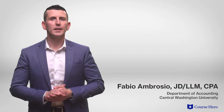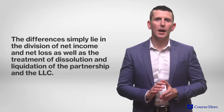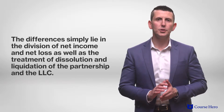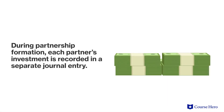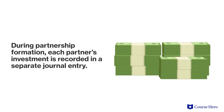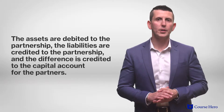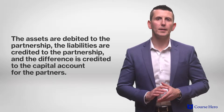The journal entries and day-to-day transactions of a partnership or LLC are generally the same as for any other organization. The differences simply lie in the division of net income and net loss, as well as the treatment of dissolution and liquidation. During partnership formation, each partner's investment is recorded in a separate journal entry, known as a partner's capital account. The assets are debited to the partnership, the liabilities are credited, and the difference is credited to the capital account for the partners.